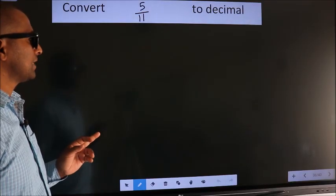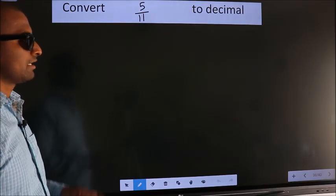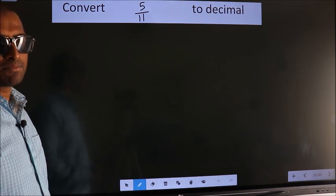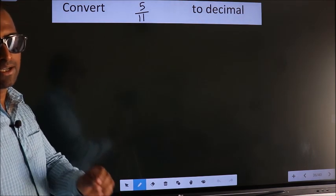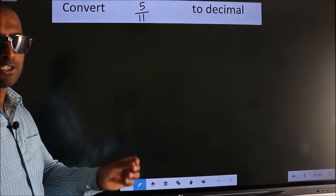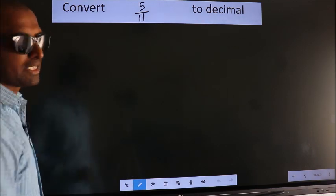Convert 5 by 11 to decimal. To convert this to decimal, we have to divide, and to divide, we should frame it in this way.